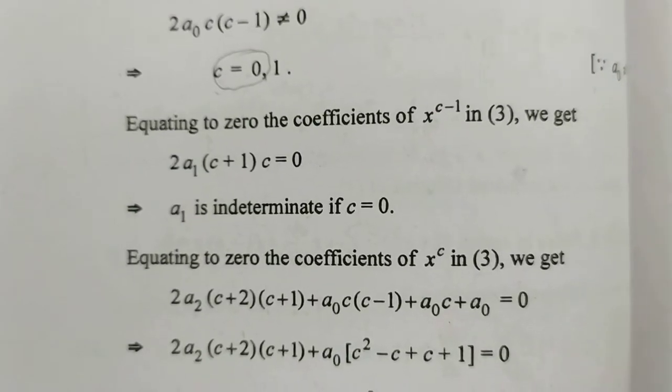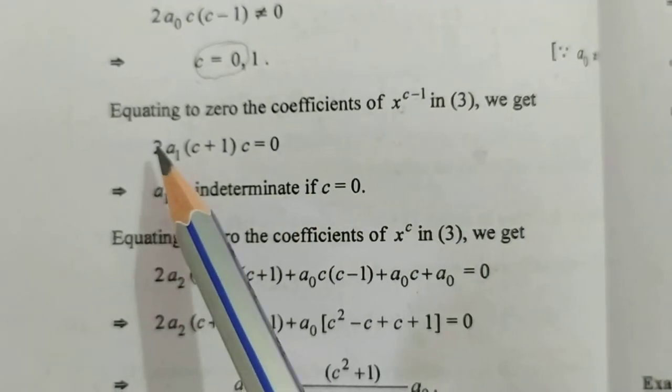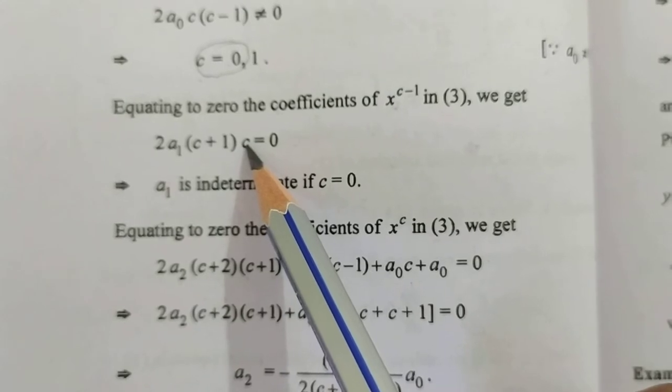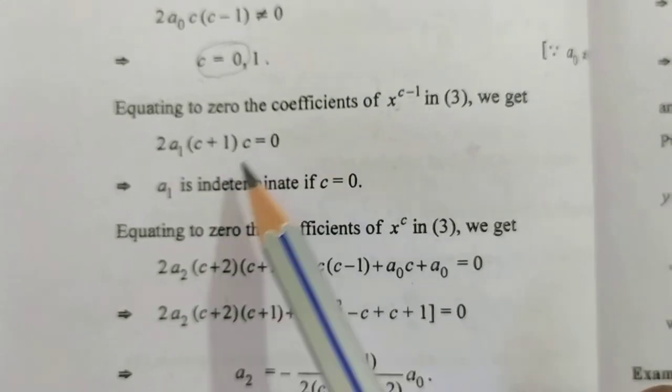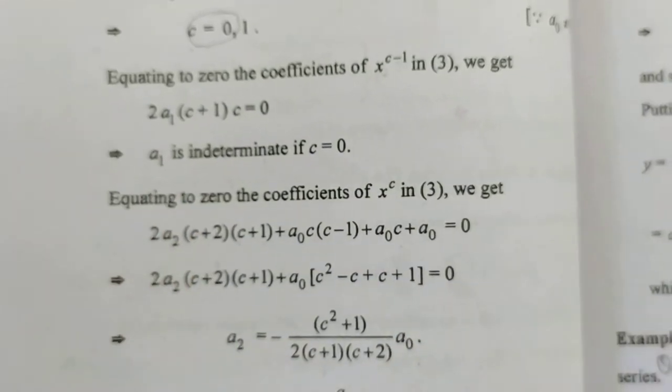Equating to zero the coefficient of x^(c-1) in equation 3, we get 2a₁(c+1)c = 0. Putting c = 0 here gives 0 = 0, which is indeterminate. So a₁ is an arbitrary constant.